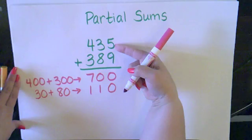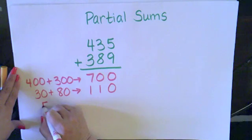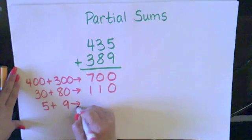Now I'm looking at my ones place. I have five ones plus nine ones. So I'll write down five plus nine and that gives me fourteen.